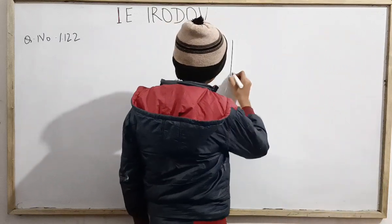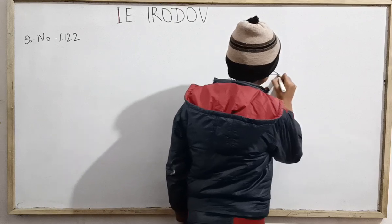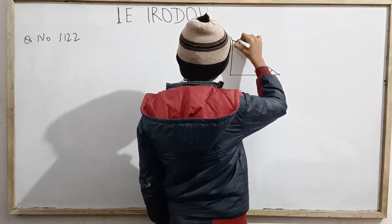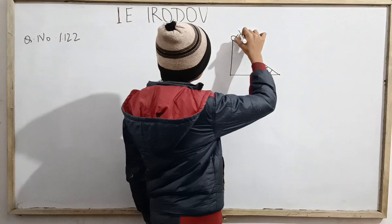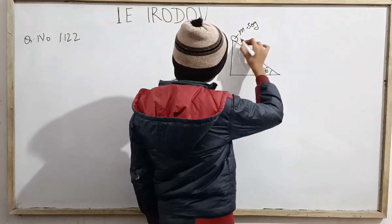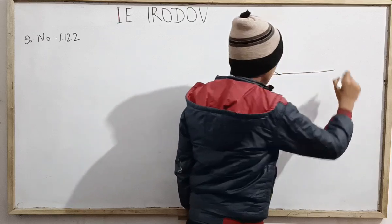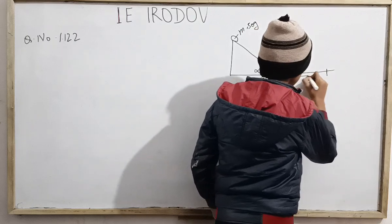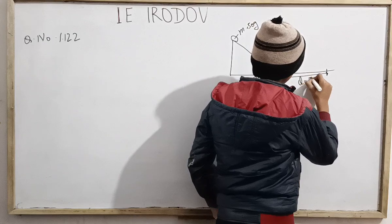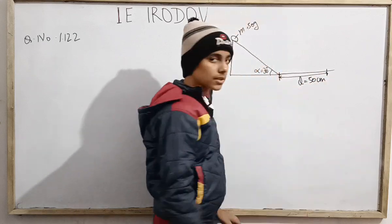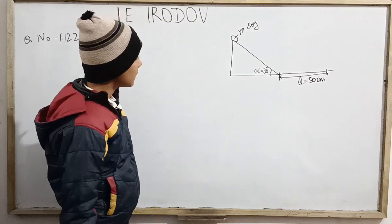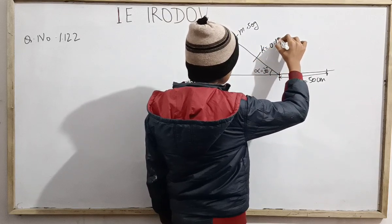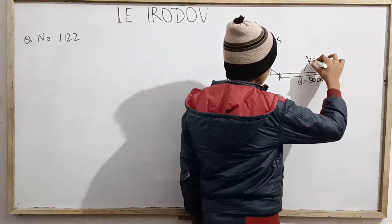So basically what is given here: we have an inclined plane with angle of inclination alpha = 30 degrees. At the top, a disk is placed of mass m = 50 grams. It slides down and after reaching the horizontal plane, slides further until it stops after traversing l = 50 cm on the horizontal level. The coefficient of friction is 0.15 for the inclined plane and also 0.15 for the horizontal plane.